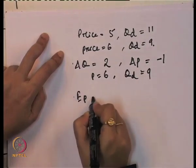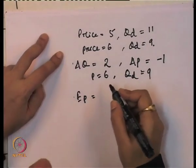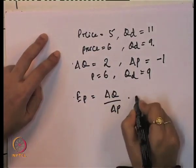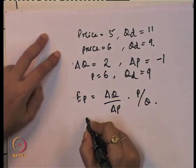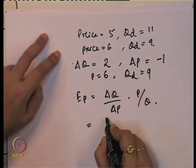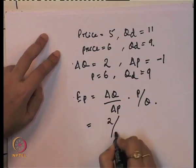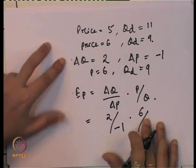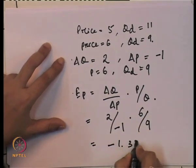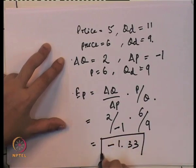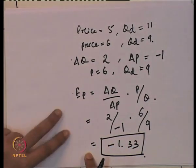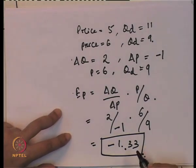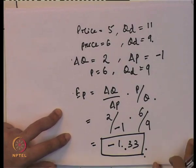The original price is 6 and the original quantity demanded is 9. The price elasticity of demand formula is ΔQ/ΔP × P/Q. In this case, ΔQ is 2, ΔP is minus 1, P is 6, and Q is 9. Solving this gives a value of 1.33, so the price elasticity of demand is minus 1.33 for a decrease in price from rupees 6 to 5.